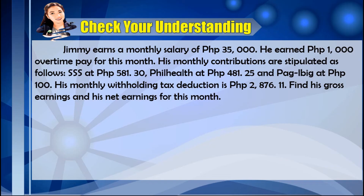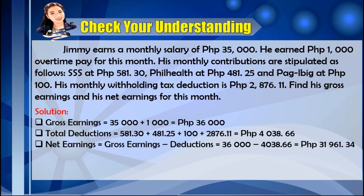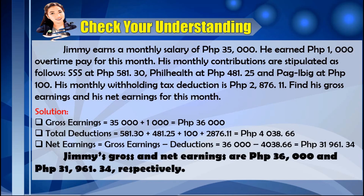Let's try another problem. You may pause the video to answer. For the gross earnings, we add P35,000 monthly salary and P1,000 overtime pay, giving P36,000 as monthly gross earnings. For total deductions, we have SSS at P581.30, plus PhilHealth at P481.25, plus Pag-IBIG at P100, plus withholding tax of P2,876.11, totaling P4,038.66. Subtracting deductions from gross earnings: P36,000 minus P4,038.66 equals P31,961.34. Jimmy's gross and net earnings are P36,000 and P31,961.34, respectively. Did you get the answers correctly? If yes, great job.